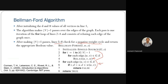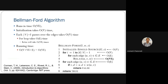The time complexity: initialization takes O(V), the outer for loop executes V times, and the inner loop executes E times, so the relaxation step runs V × E times. The negative cycle detection loop takes O(E). The overall time complexity is O(V · E).